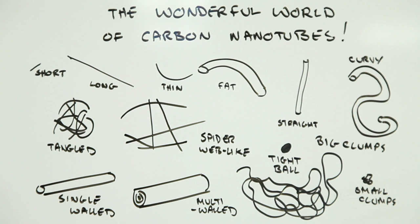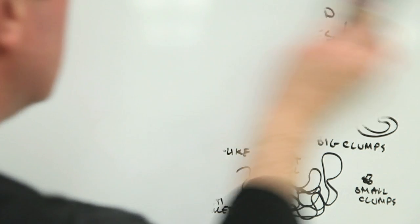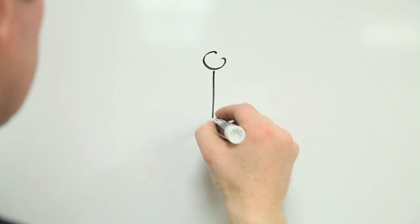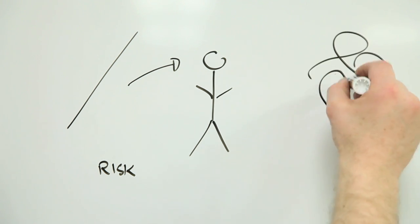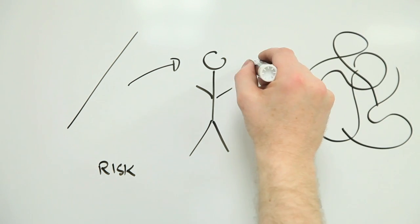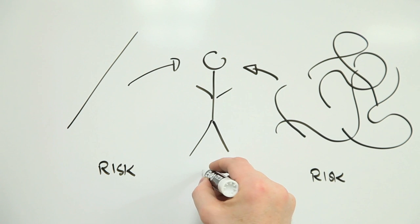And the risks they present depend critically on what type of carbon nanotube you're looking at. A very long, thin, straight, multi-walled carbon nanotube, for instance, is a completely different beast to a spiderweb-like cluster of single-walled carbon nanotubes.